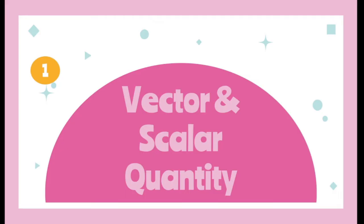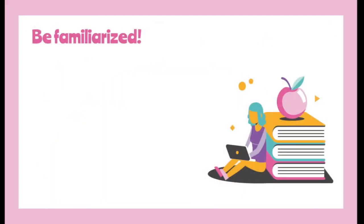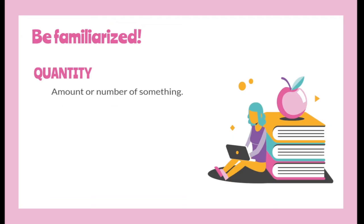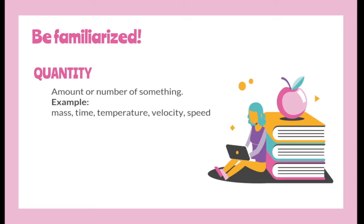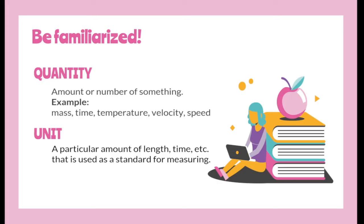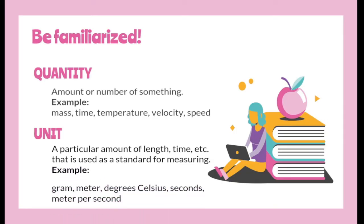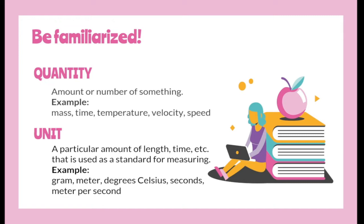Before we differentiate scalar and vector quantities, let us identify first what quantity and unit are. Quantity is the amount or number of something. Examples are mass, time, temperature, velocity, and speed. Unit, on the other hand, is a particular amount of length, time, etc. that is used as a standard for measuring. Examples are gram, meter, degrees Celsius, seconds, and meter per second.